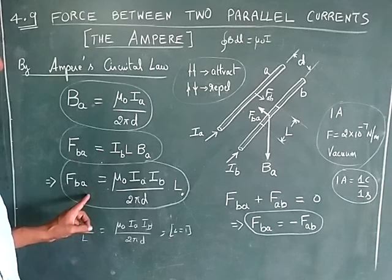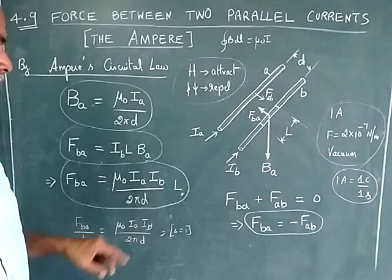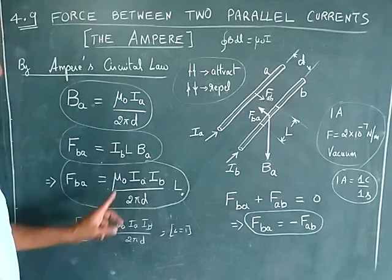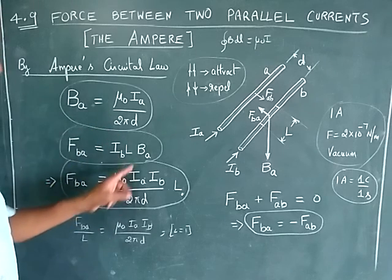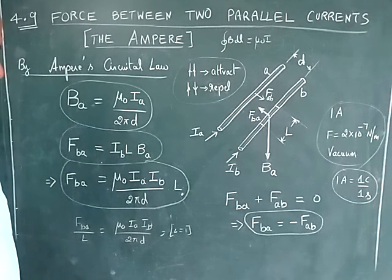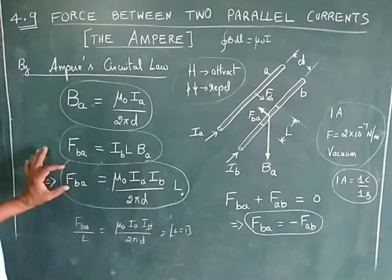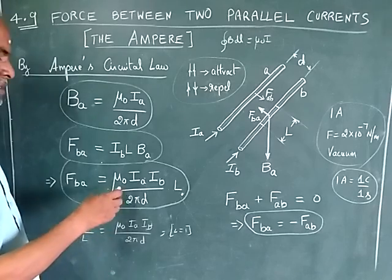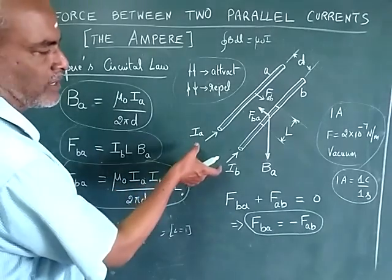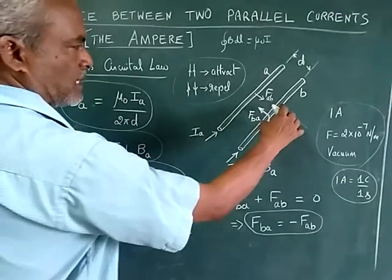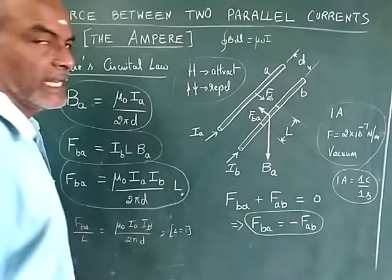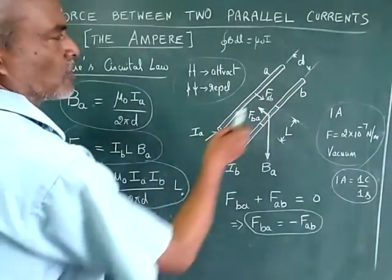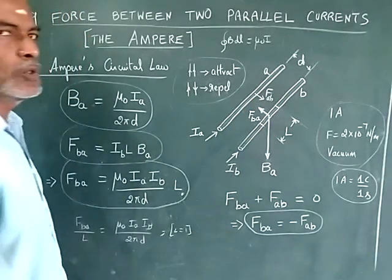So FBA is equal to IB into L into BA. Now, BA is μ₀IA divided by 2πd. Substituting this value, FBA equals μ₀·IA·IB·L divided by 2πd, which is the product of the two currents times the length L, divided by 2πd, where 2π is constant and d is the distance between the two conductors.